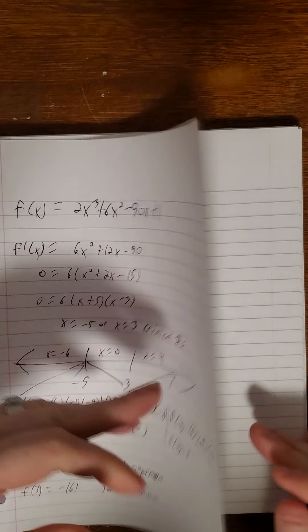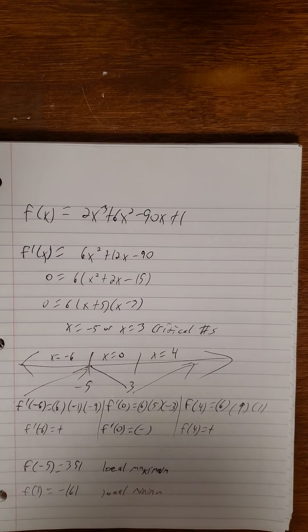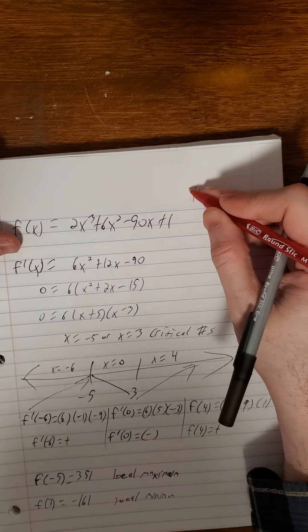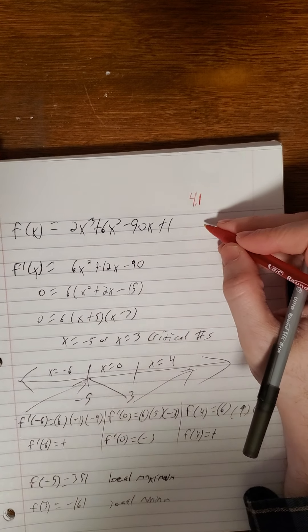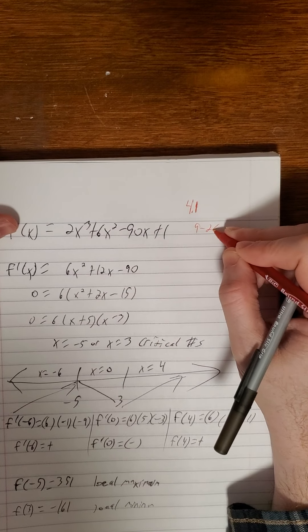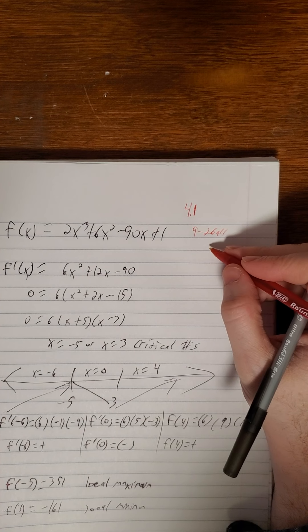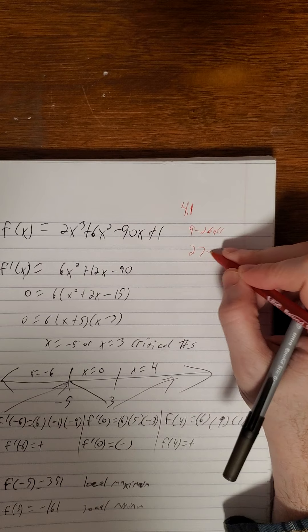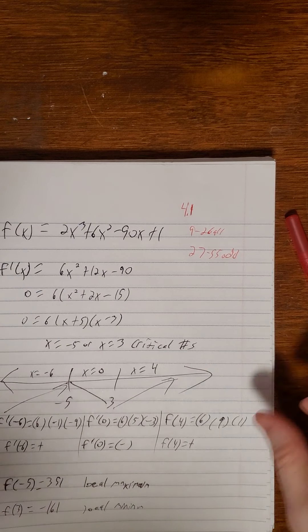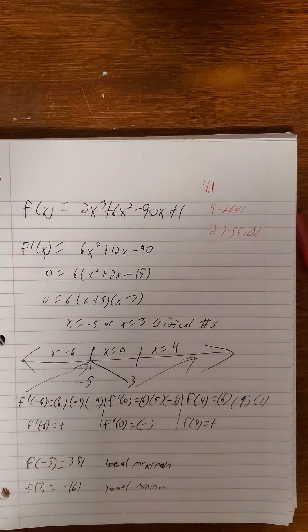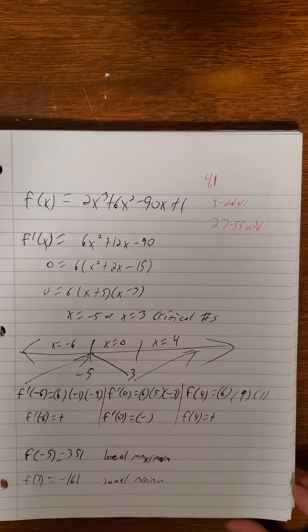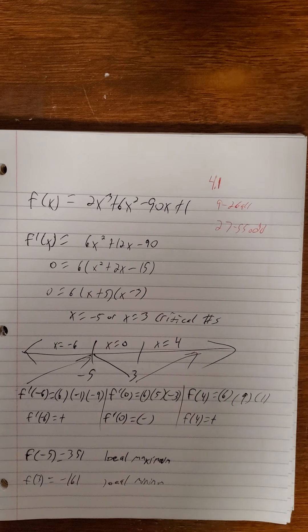All right. So that should give you enough to try this out. Let's see. So in, we're in 4.1. I would recommend, let's see, 9 to 26 all, and 27 to 55 on the odds. And if you'd like, I can also find equivalents, rough equivalents in the electronic homework as well. So if you have any questions, please get in touch. Otherwise, I will see you next time. Stay safe out there.